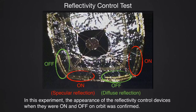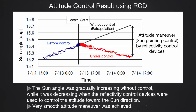Next we go to the reflectivity control test, which is used for attitude control. This is an image taken by the separation camera. We can see a reflectivity difference between two areas — one area controlled to specular reflection and another to diffuse reflection. In this experiment, we confirmed that reflectivity can be controlled. This figure shows the sun angle before and after the control start. In this area the angle is inclined, but after the control start, the sun angle declines as shown.